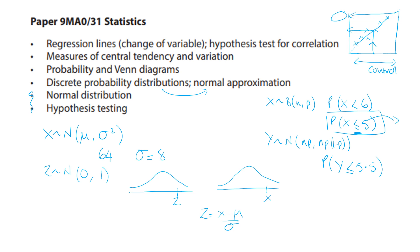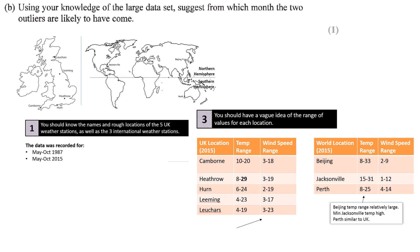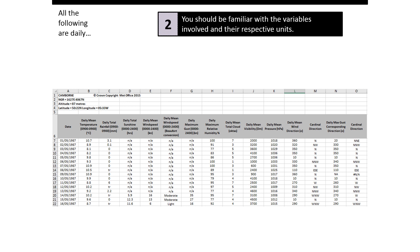So I've just included some information for you to have a look at about the large data set. So you should have an idea when the data was recorded in 1987 and 2015, where the weather stations are. So there's five in the UK and three international ones and have a rough idea about the ranges. So here we've got the temperature range and the wind speed. So here's an excerpt from the large data set that shows all the variables involved and their respective units.